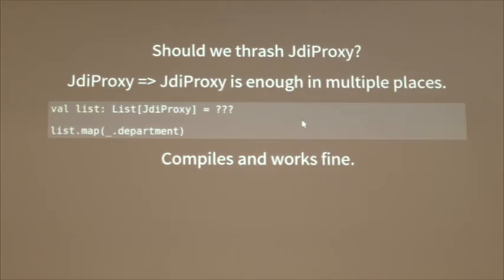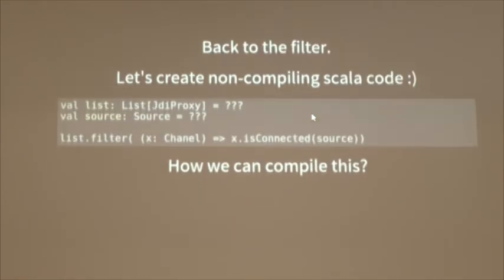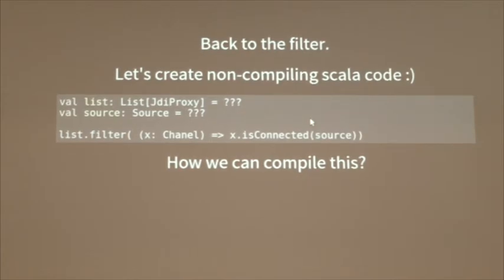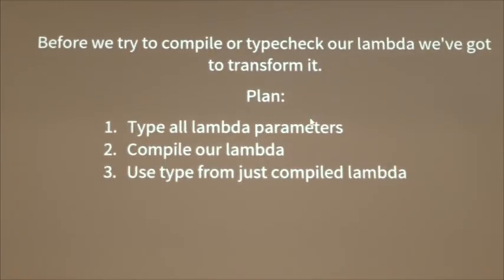So we created a JDA proxy with dynamic methods that return JDA proxy — basically we're creating Groovy or any dynamic language here. Does this solve our problem? Not completely, because filter still can't compile. Right now we have a lambda that takes JDA proxy and returns JDA proxy, and we still need a JDA proxy that returns Boolean — it still doesn't compile. But the idea does work for a lot of use cases, like when mapping, grouping by, and so on. When we enter the JDA proxy world we can live with it, and usually it works and shows us what we need.